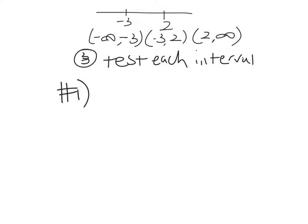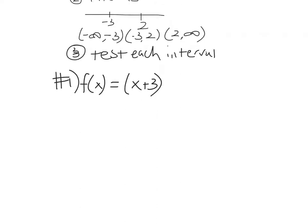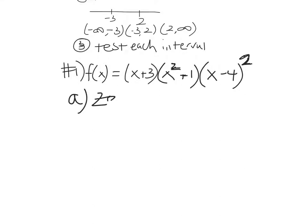Number 1. Suppose that f of x equals x plus 3, times x squared plus 1, times x minus 4 squared. That's quite the polynomial, and it's already been factored for you. We're going to determine the real number values of x that cause this polynomial: A, we're going to find the zeros; B, we're going to find out when this polynomial is positive; and C, when this polynomial is negative.